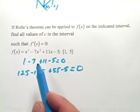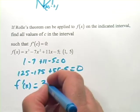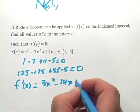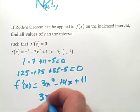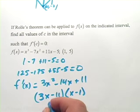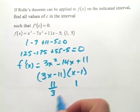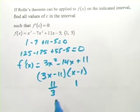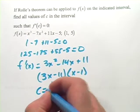Now, how do we find those values of c? We want to find the zeros of the derivative. So f prime of x is 3x squared minus 14x plus 11. We can factor this as (3x minus 11)(x minus 1). Our x values are 11/3 and 1. We need to check if they're in the interval — 11/3 is definitely between one and five, so that's fine. But one is actually the endpoint of the interval, so it's not included. We're left with just 11/3, and this is the value c at which the slope of the tangent line is zero. That's our answer.